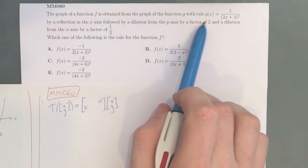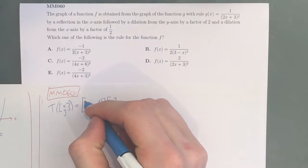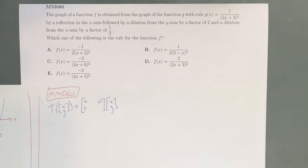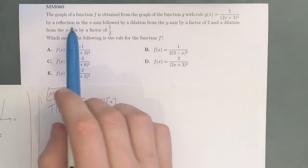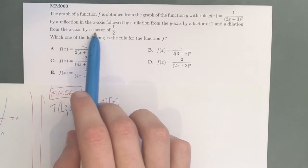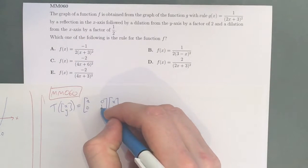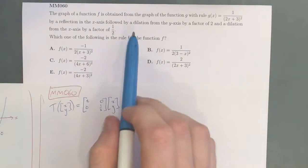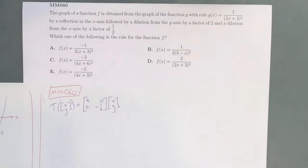Now we're dilating it by a factor of 2 in the y-axis, which means that a 2 goes here, and we're reflecting it in the x-axis as well as dilating it from the x-axis by a factor of a half. So the half goes here, and because we're reflecting it as well, this becomes a negative half.